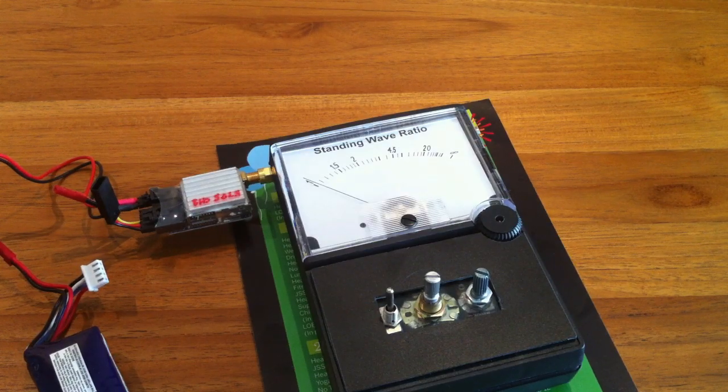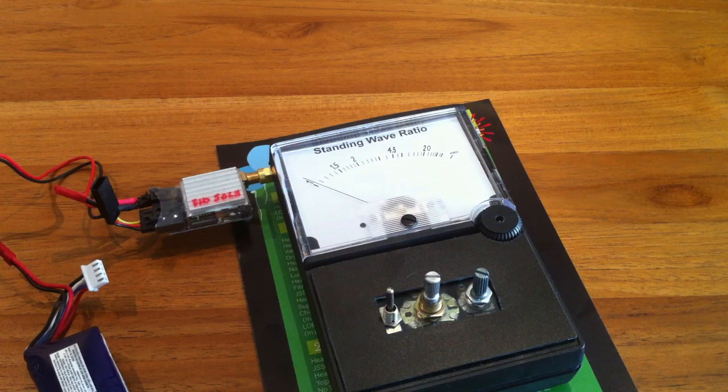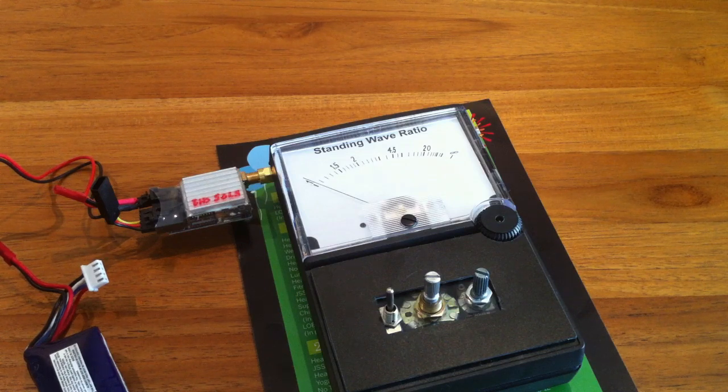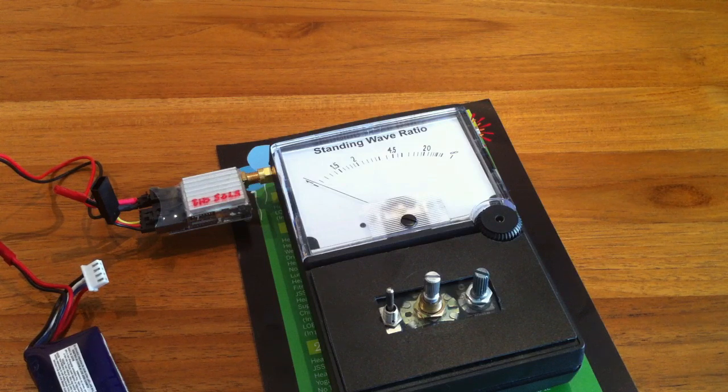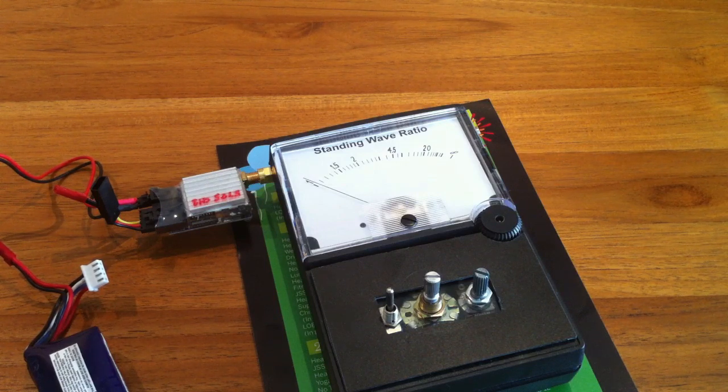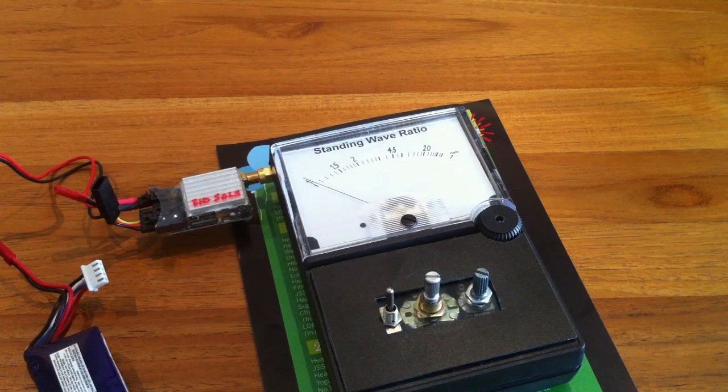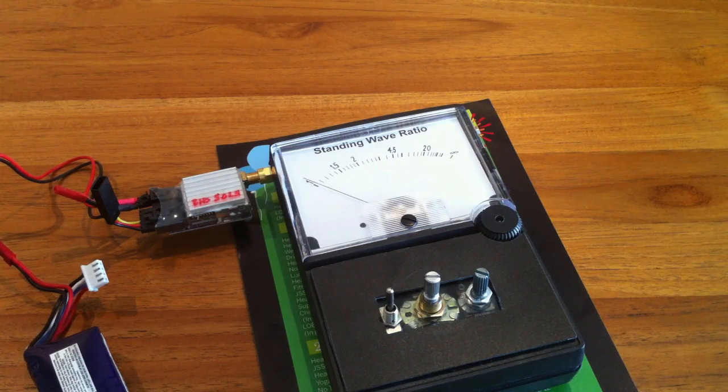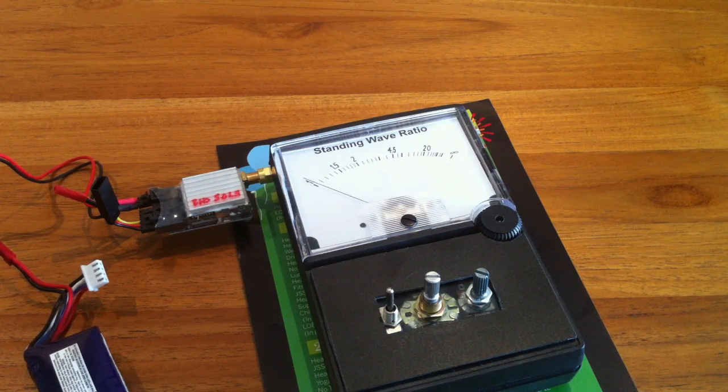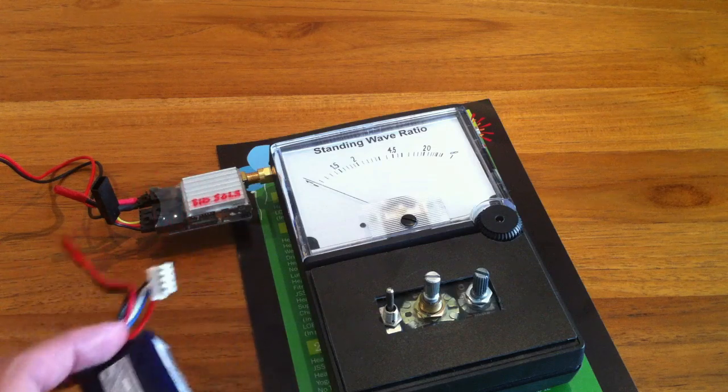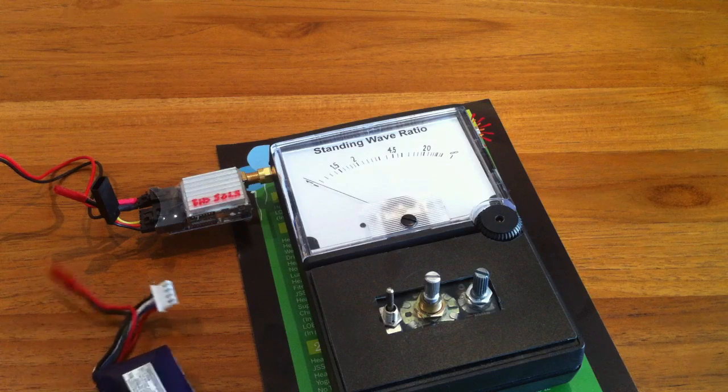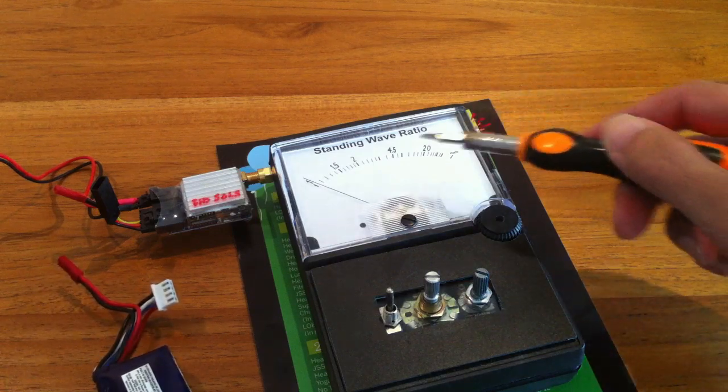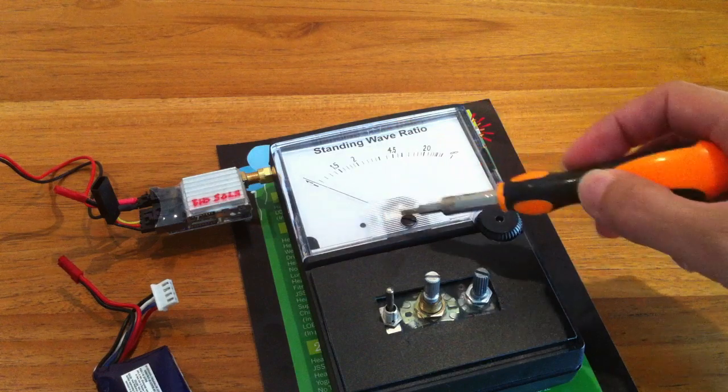Okay, this is the SWR meter, and I'm now going to measure a few antennas using it. But before we can make accurate measurements of the antenna, there are some settings that needs to be done. The first step is, with the transmitter off, the battery is not connected, we need to ensure that the needle is pointing to the zero.